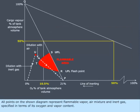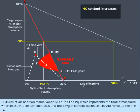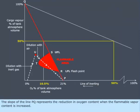All points on the shown diagram represent flammable vapor-air mixture and inert gas, specified in terms of its oxygen and vapor content. Mixtures of air and flammable vapor lie on the line PQ, which represents the tank atmosphere wherein the HC content increases and the oxygen content decreases as you move up the line PQ. The slope of the line PQ represents the reduction in oxygen content when the flammable vapor content is increased.